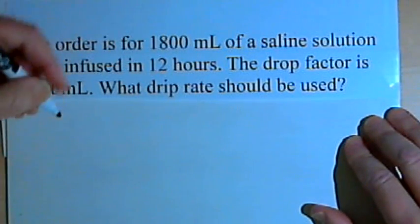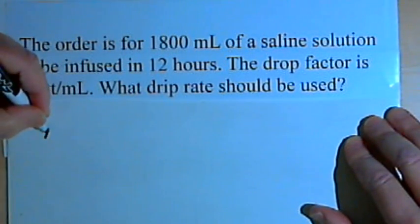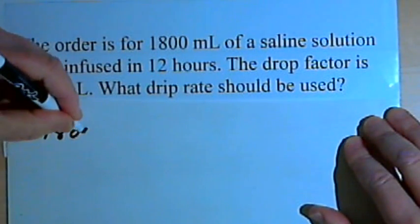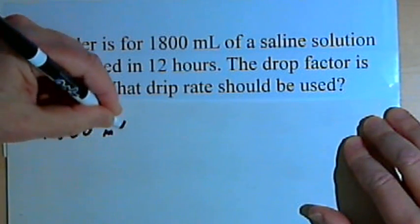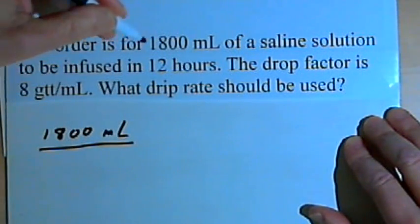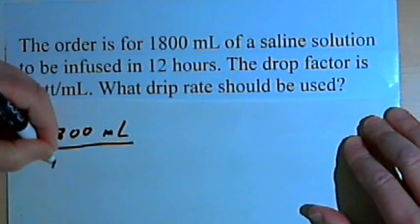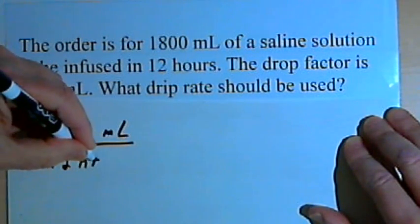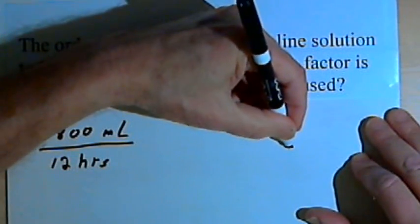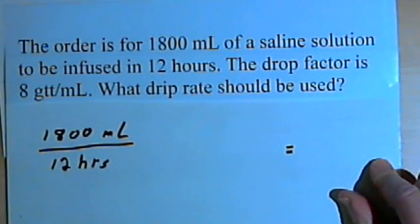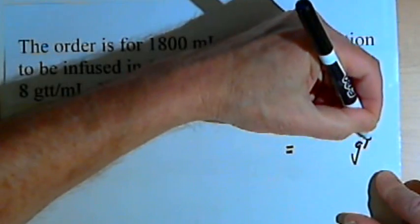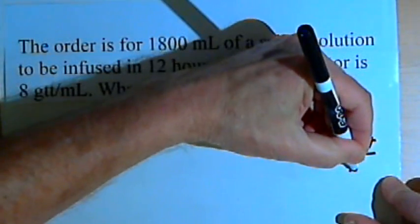We're going to start out with the order. We'll write that on the left, the beginning of the equation. That's 1800 milliliters over 12 hours. Let's put an equal sign, and on the right we'll put the units we want to end up with. We want drops per minute, so gtt over minutes.